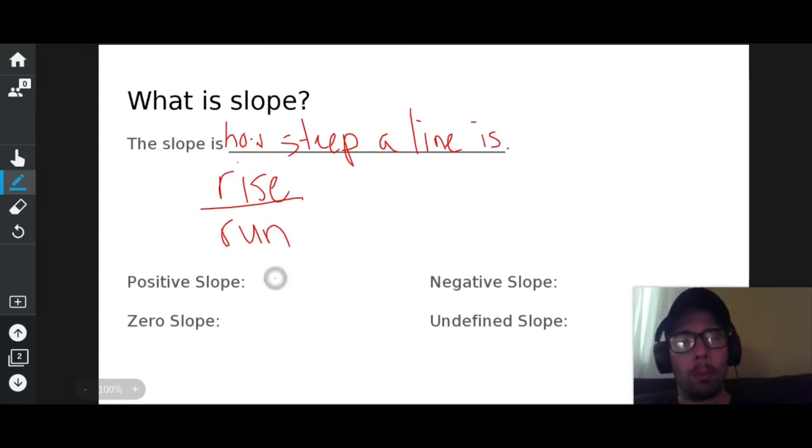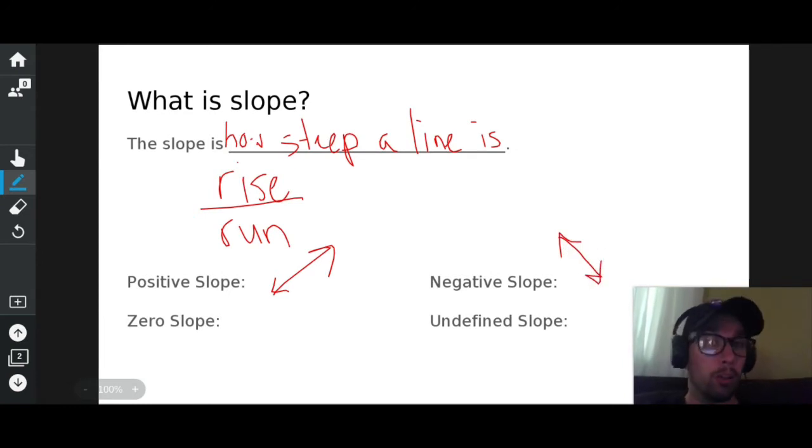Positive slopes go up and to the right. Some people might consider that also down and to the left. Negative slopes go up and to the left. Some people might consider that down and to the right.